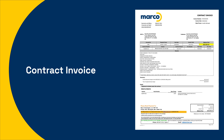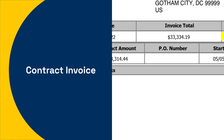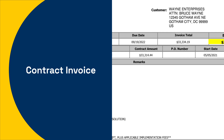Depending on your company, you may see some blank spaces on our invoices. For example, some clients provide us with PO numbers if they're helpful for their billing system. If your organization doesn't use them, you won't see those boxes filled in.